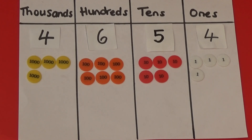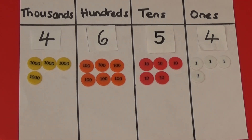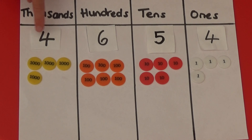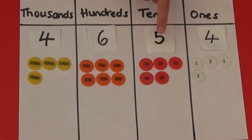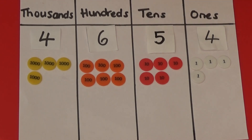I've used place value counters to make the number 4654. I've used 4 1000 counters for the 4000, 6 100 counters for the 600, 5 10s counters for the 50 and 4 1s counters for the 4.